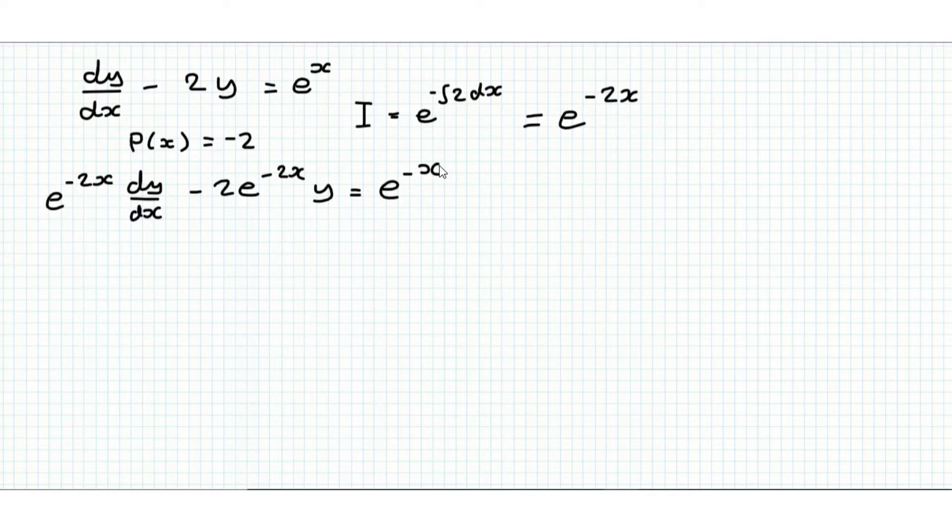And now when we look at this, we can see we're trying to look for a function to satisfy this. Because once we're in this form, we can integrate both sides with respect to x, and then we'll get rid of this dy/dx and find a function for y in terms of x, which is the aim.